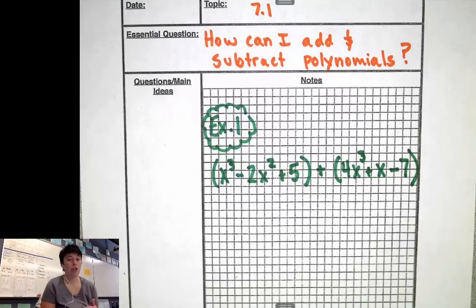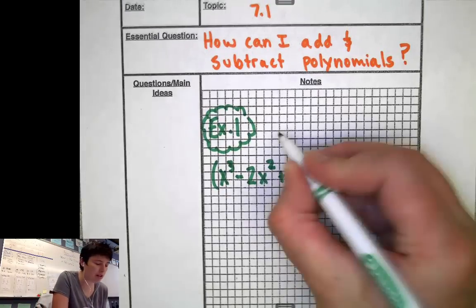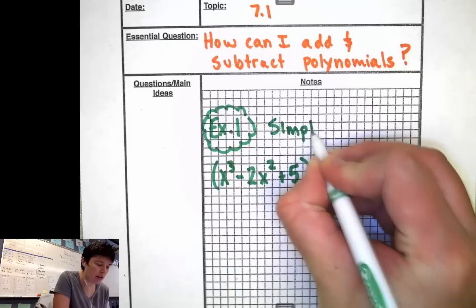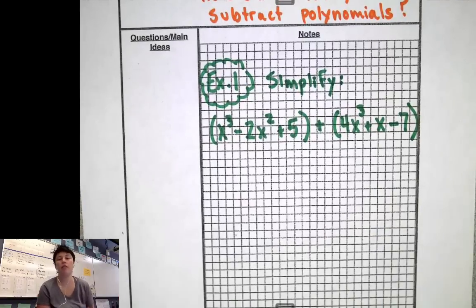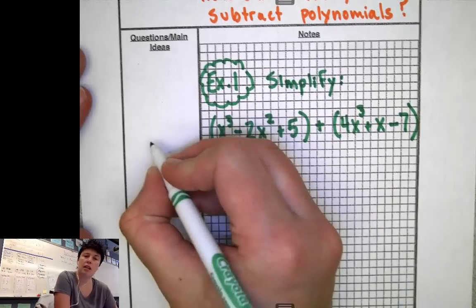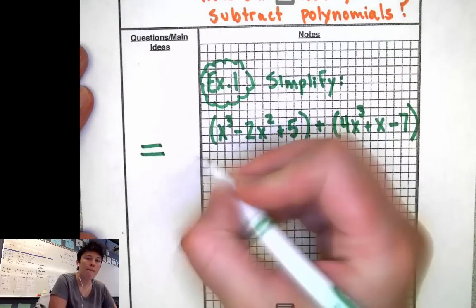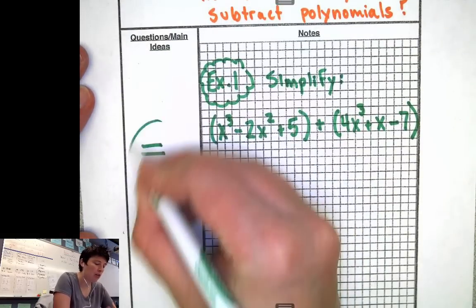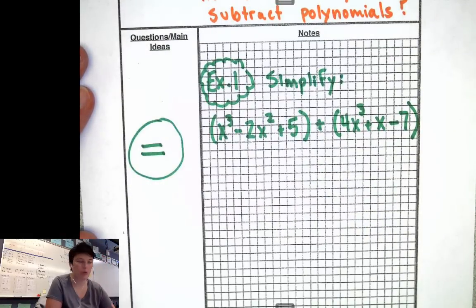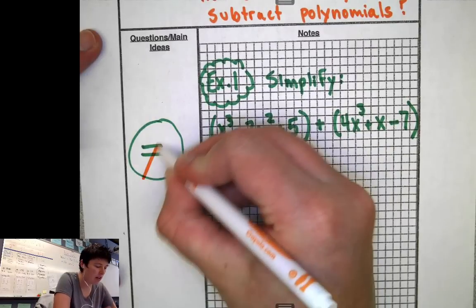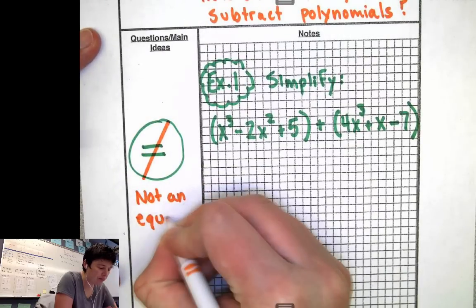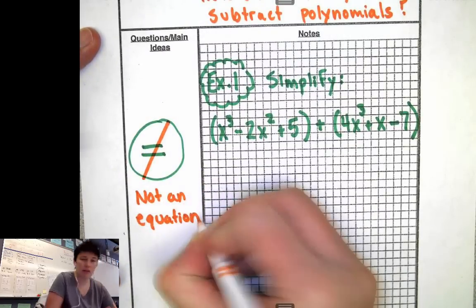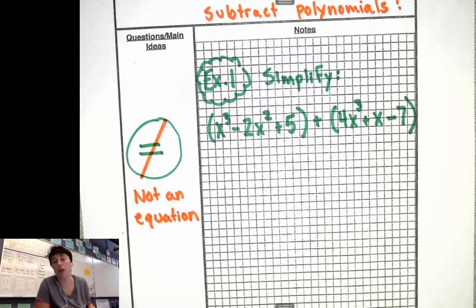My directions are purely to simplify, because like I said, you can't solve even if you wanted to. If you wanted to solve for x, it's going to be impossible because you have no equal sign — it's not an equation. Over here on the main idea side of my notes, I'm going to put an equal sign and cross it out: not an equation. We can't solve for x even if we really wanted to. We don't have enough information.